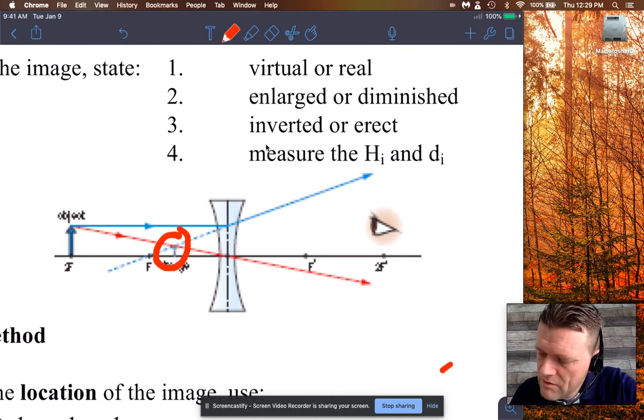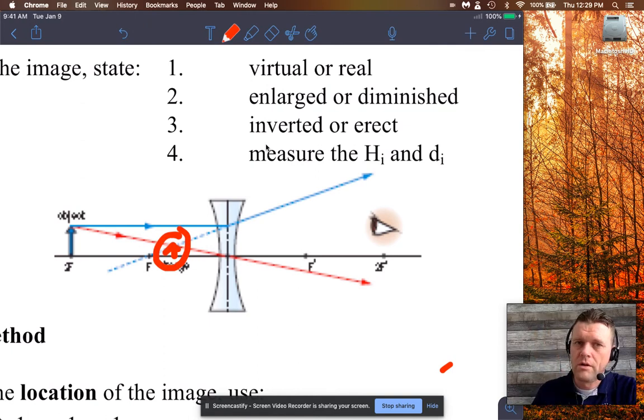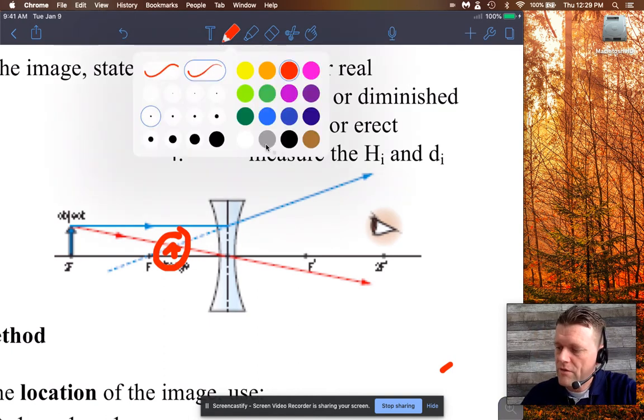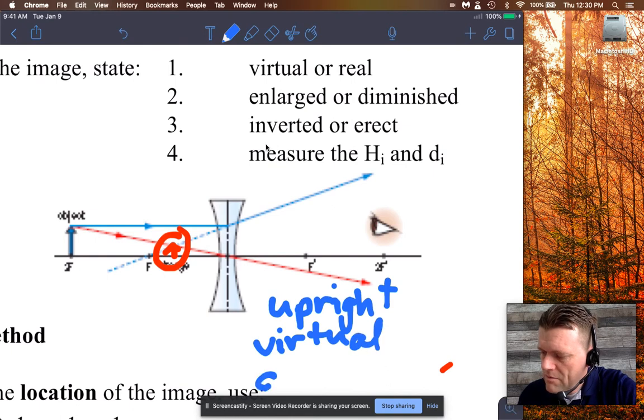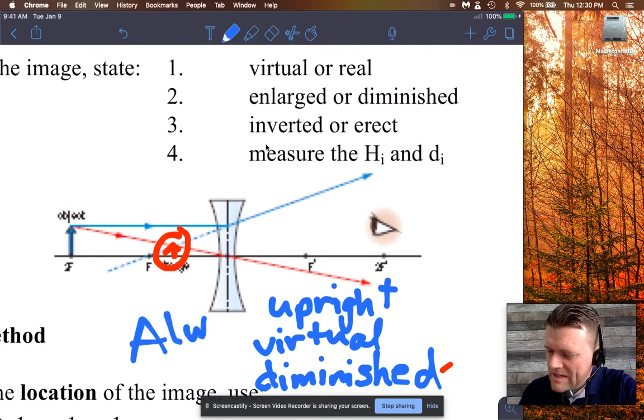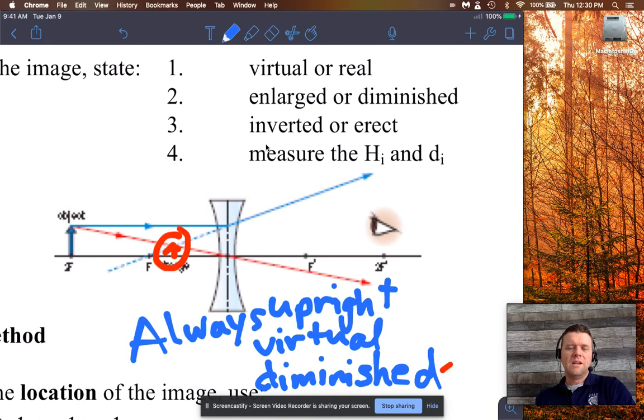And for diverging lenses, the image is always upright, it's always virtual, and it's always diminished. And if you're catching that now, that is the same as a diverging mirror. In a diverging mirror—right, the big bulging mirrors that you see in the convenience stores and everything—the image is always upright, it's always diminished, like it's always smaller, and it's always virtual. So that's the cool parallel.